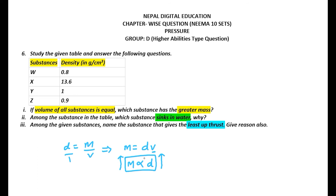So we need the substance with the greatest mass, which means the greatest density. YOX has the greater density, so YOX has the greater mass. Next, among the substances in the table, which substance sinks in water? The density of water is 1 gram per cm cube. Objects sink when their density is more than 1 gram per cm cube. In this case, YOX has density greater than 1, so YOX sinks in water because its density is more than the density of water.